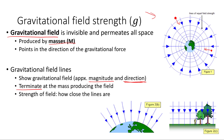The strength of the field is represented by how close the lines are together. In this field line diagram of the Earth, as we get closer to the Earth the field lines are closer together, while far away they're quite far apart. That shows us the gravitational field gets weaker as we get farther from the Earth, and stronger as we're closer. The density of field lines in a diagram shows something proportional to the field strength.